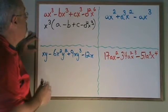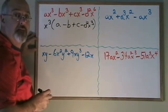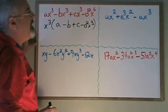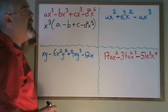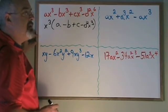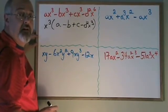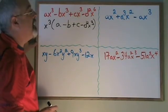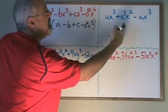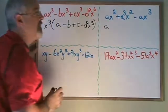I can verify this by multiplying my two factors together and making sure that they give me the original expression. Looking at this next example, I have ax squared plus a cubed x squared minus ax cubed. This time there will be more than just an x term in the common factor. All three terms have a's and all three terms have x's, so the common factor will have a's and x's. The smallest a of a, a cubed, and a is a, so my greatest common factor is going to include an a.